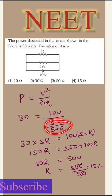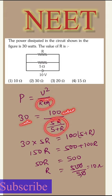R equivalent is 5R/(5+R). Power equals V²/R equivalent. We can apply: power is given as 30, V² where 10 squared becomes 100, and R equivalent equals 5R/(5+R).